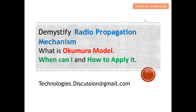Hello everyone, welcome to the technologies discussion channel. Today I'd like to continue the discussion on radio propagation mechanisms. Earlier I covered the free space path loss model, which can only be used when nothing is in between the transmitter and receiver — basically the transmitter and receiver need to have line of sight. For this video I'm going to cover the Okumura model.